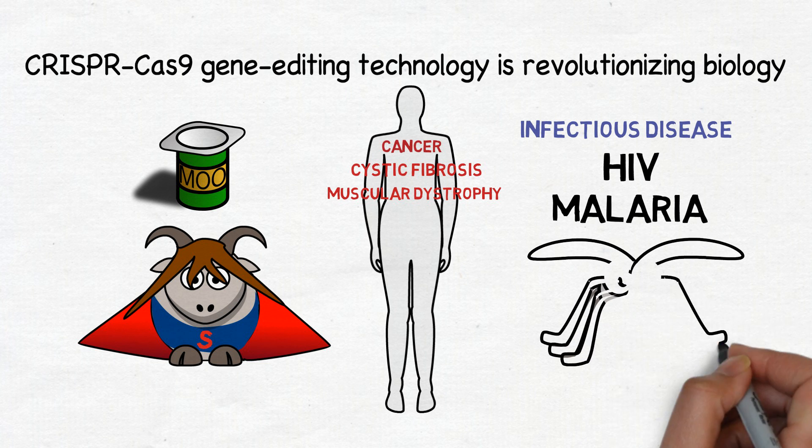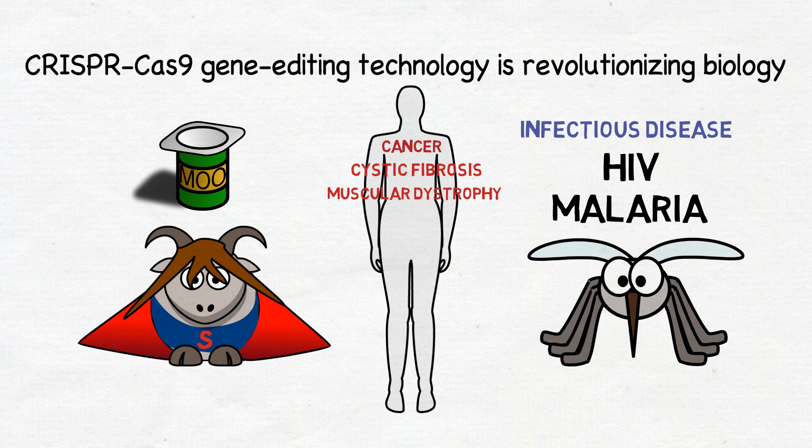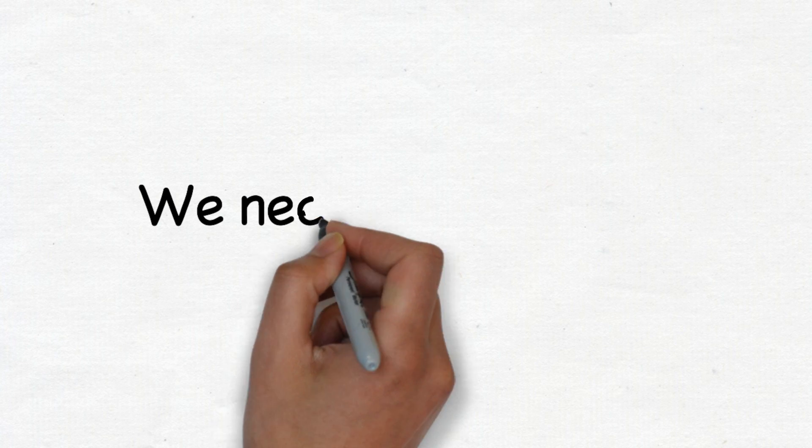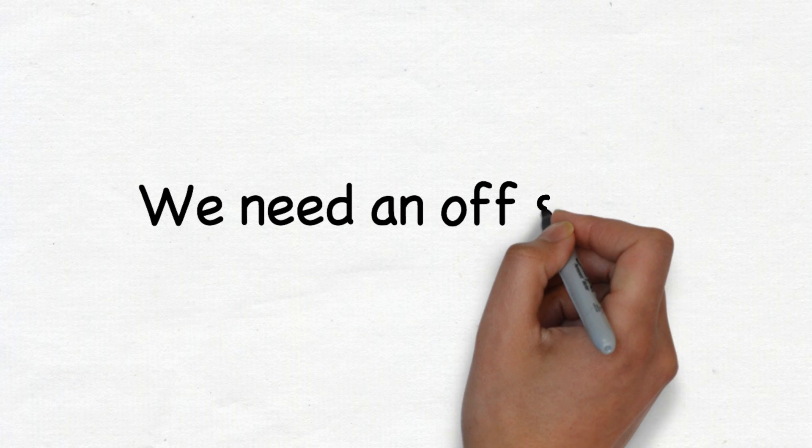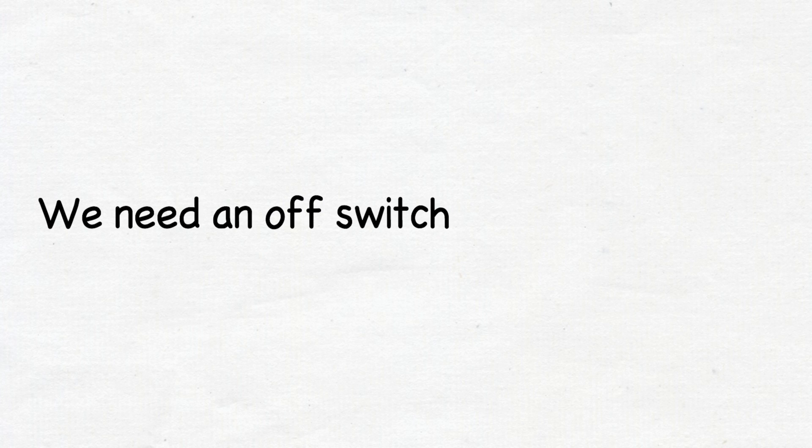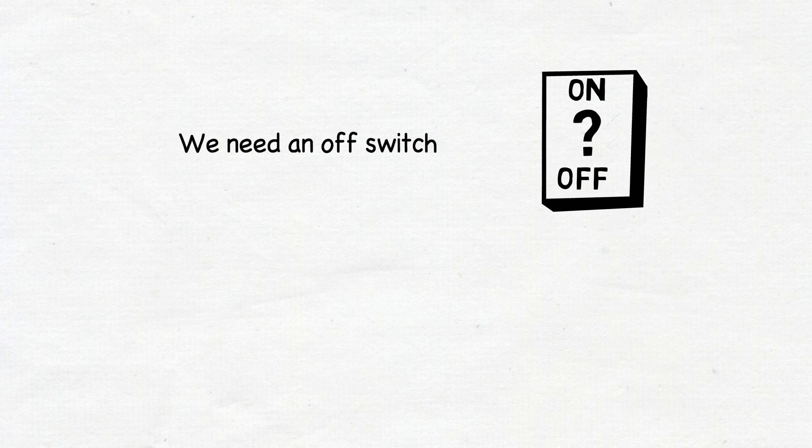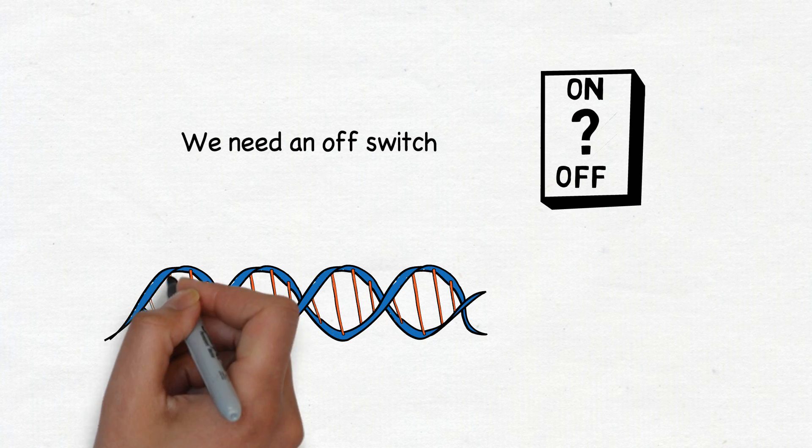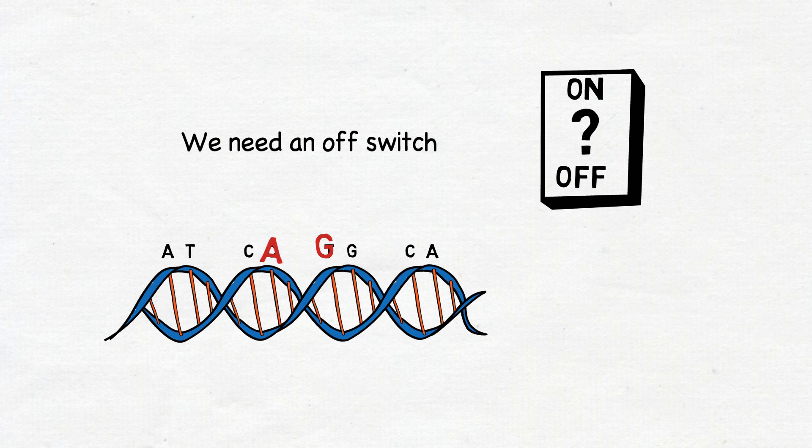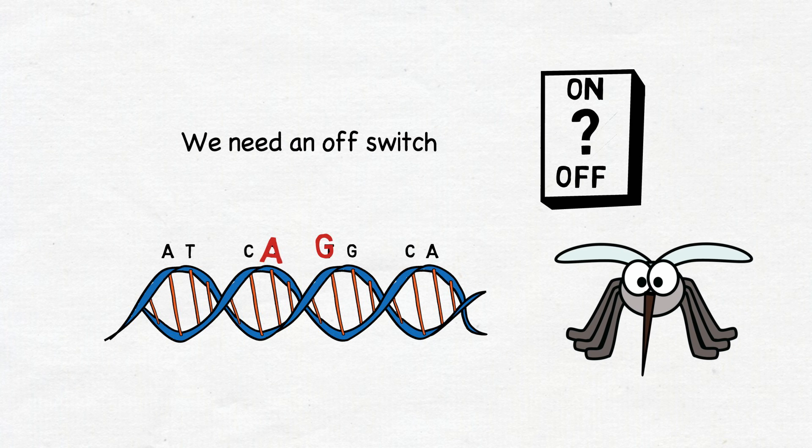Just imagine if we could eradicate malaria by releasing engineered mosquitoes into the wild. But before we can use this technology safely in humans, or mosquitoes for that matter, we need to have a reliable off-switch. The longer Cas9 remains active in a cell, the greater the chance of mutations that could trigger cancer or have other unintended consequences.